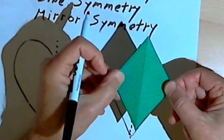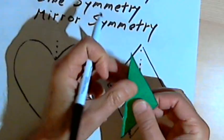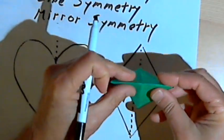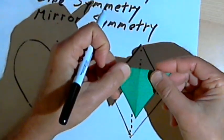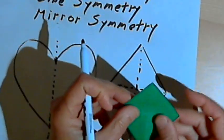If I do this with paper, I can fold this paper one way and both sides will match. I can fold the paper the other way and both sides will match. So you can have more than one line of symmetry.